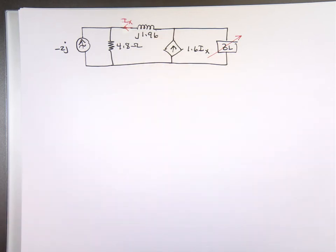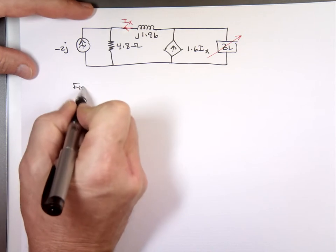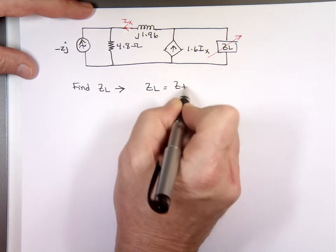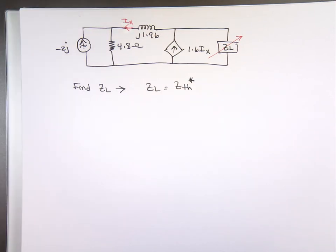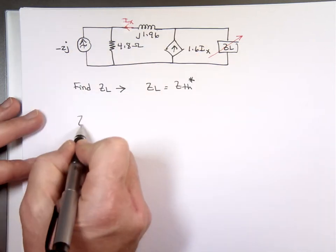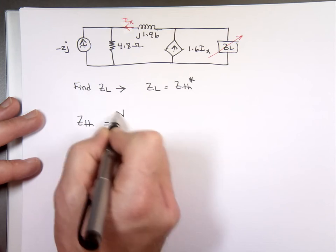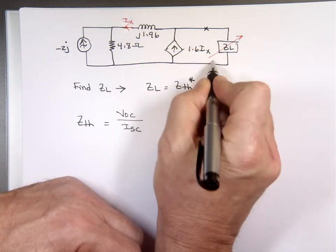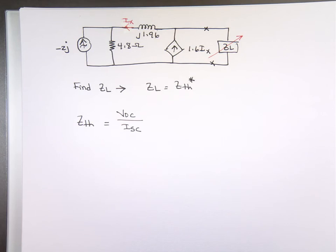To find Z_Thevenin, since we have both independent and dependent sources, I use Z_Thevenin = V_open-circuit / I_short-circuit. I'll chop the circuit at the load terminals and find both V_oc and I_sc separately.